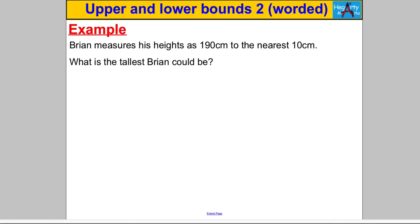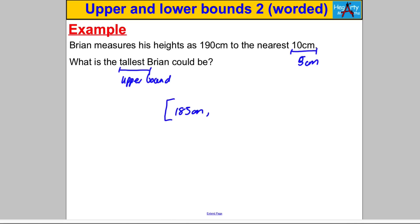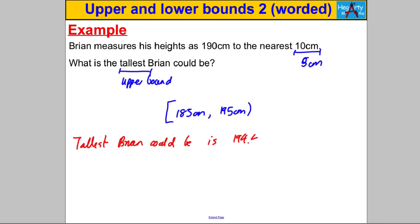Next question: Brian measures his height as 190 centimeters to the nearest ten centimeters. What is the tallest Brian could be? They're asking for the upper bound. Half the nearest ten to get 5 centimeters. The lower bound is 185 centimeters and the upper bound is 195 centimeters. The tallest Brian could be is really 194.9 recurring centimeters, but you may get away with writing 195 centimeters in the exam, as that is technically the upper bound. Either should do.